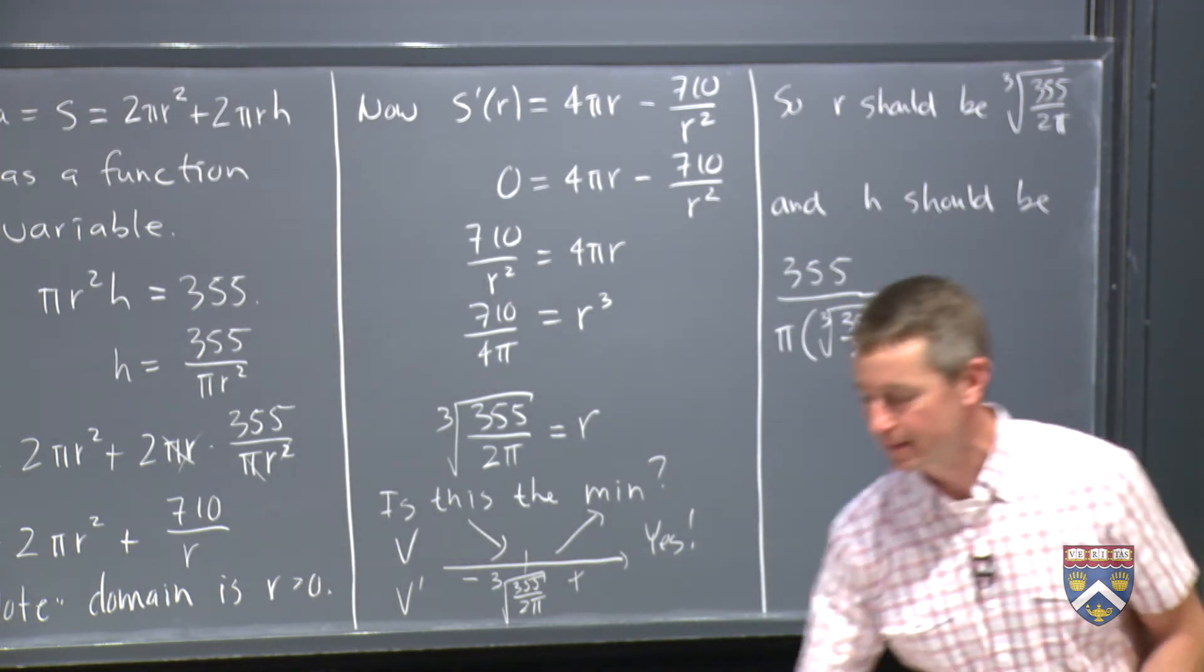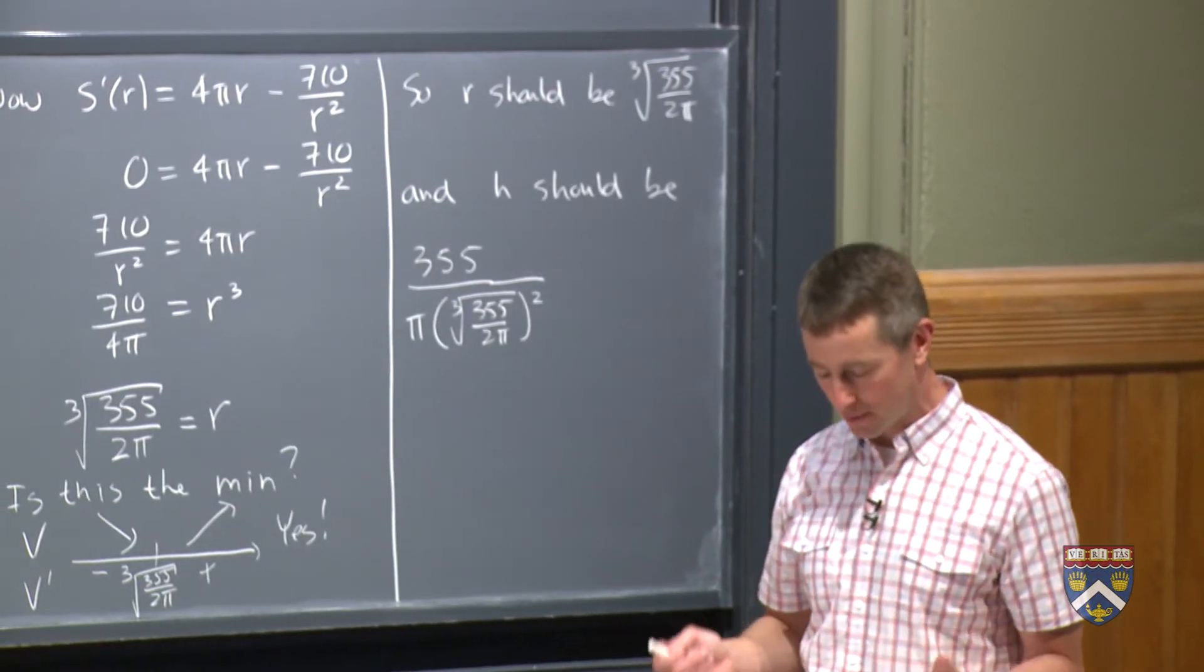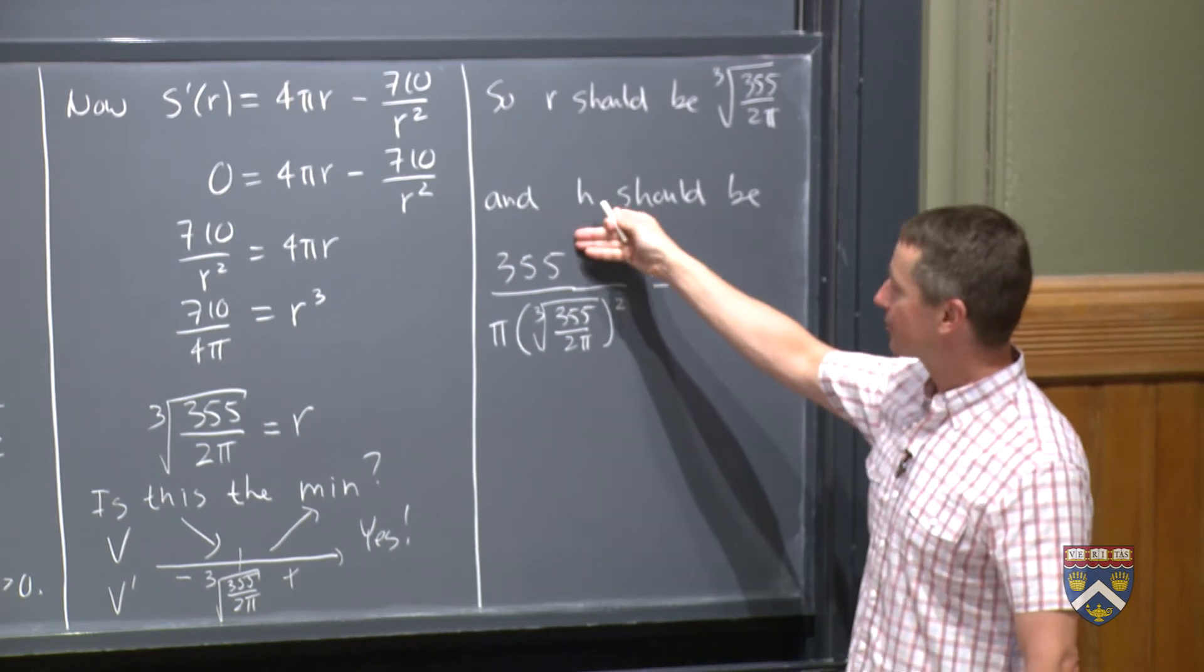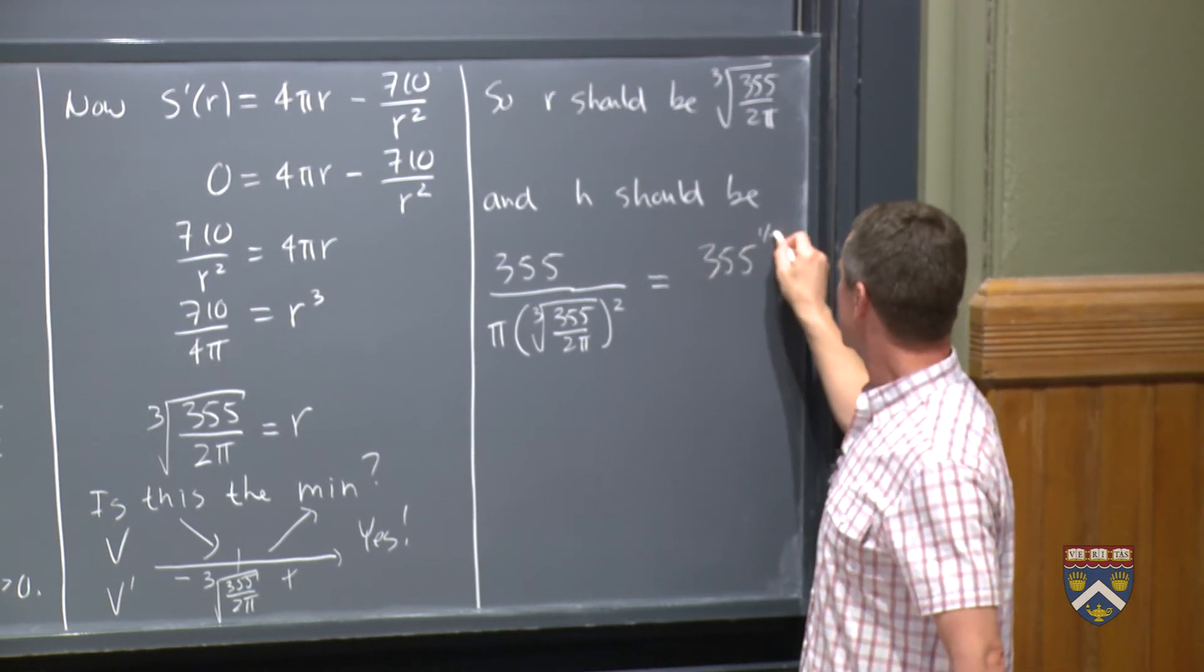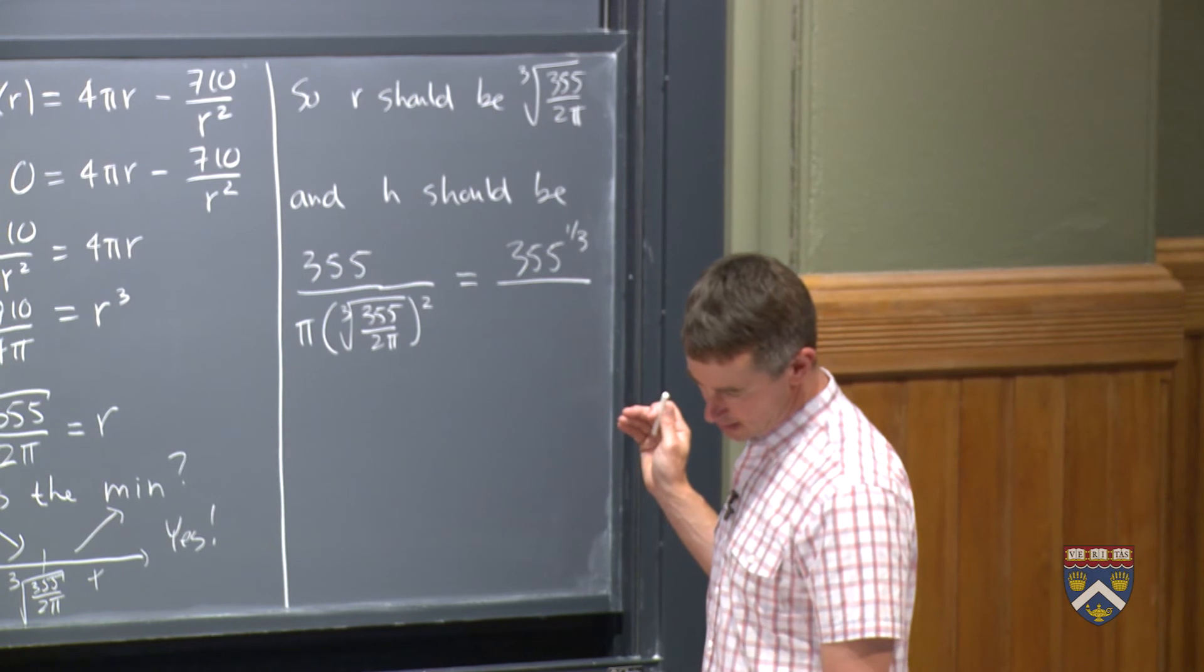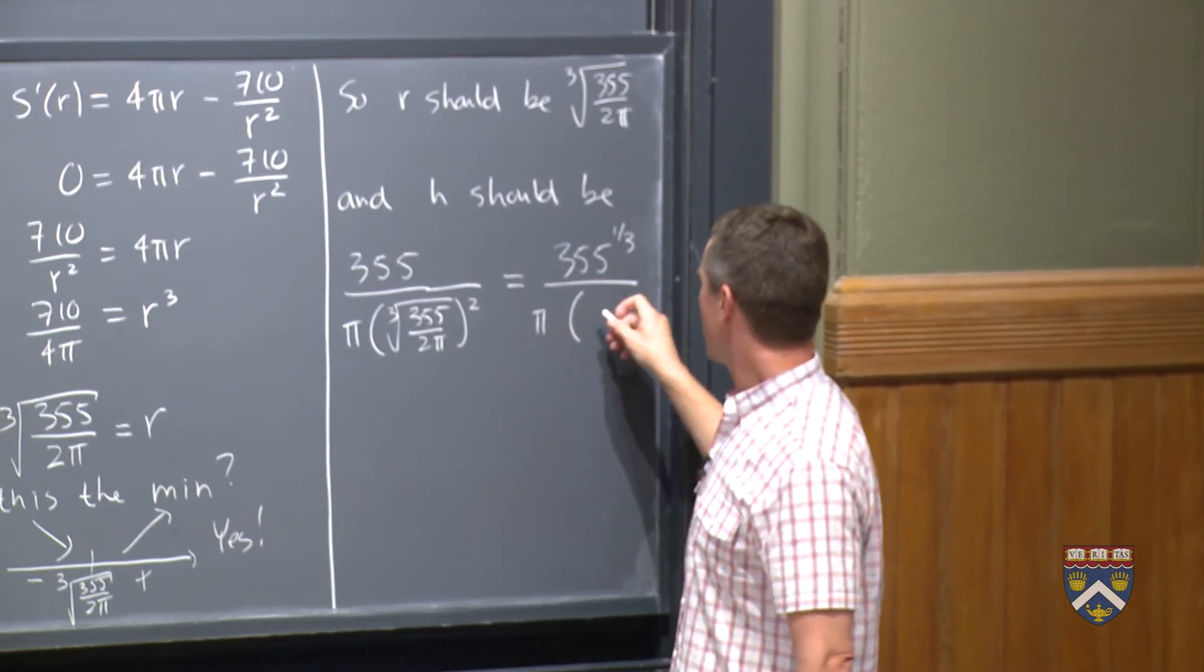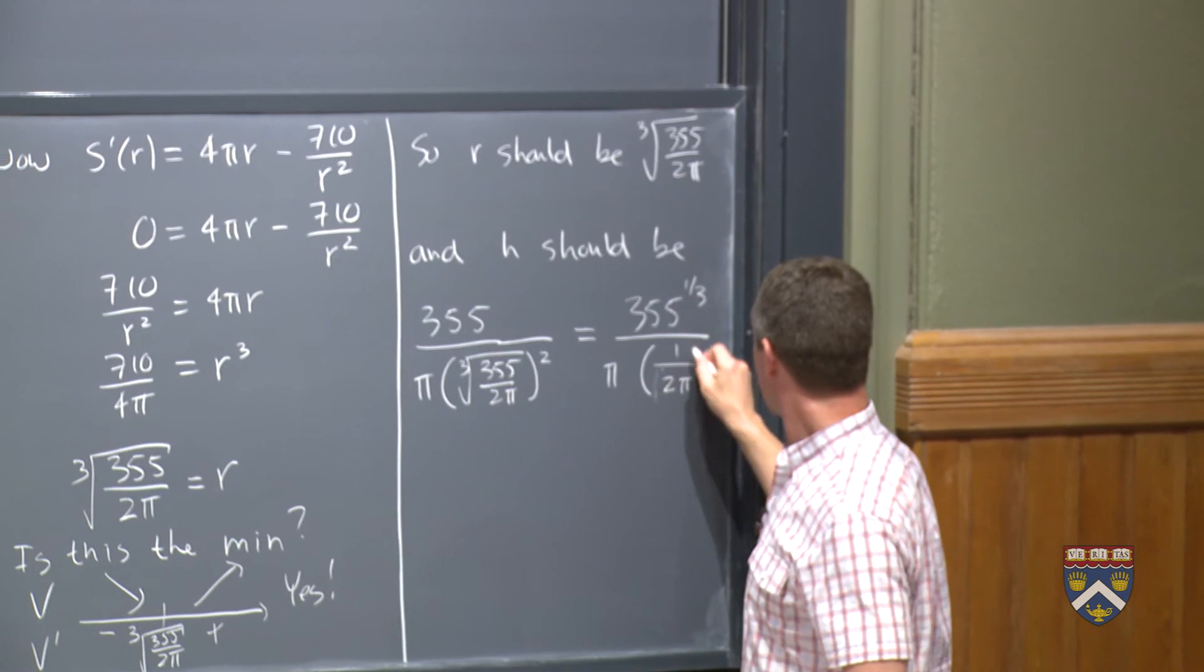And as usual, you don't need to simplify, so if you want to leave it like that, that's fine. One thing about these problems is that often if you do simplify, it sort of works out to be something nice. So if we do simplify this, I've got a 355 on the top, I've got a cube root squared of 355 on the bottom, meaning I've got 355 to the 1 on the top and 355 to the 2 thirds on the bottom, meaning on the top I really have 355 to the 1 third after we simplify that.